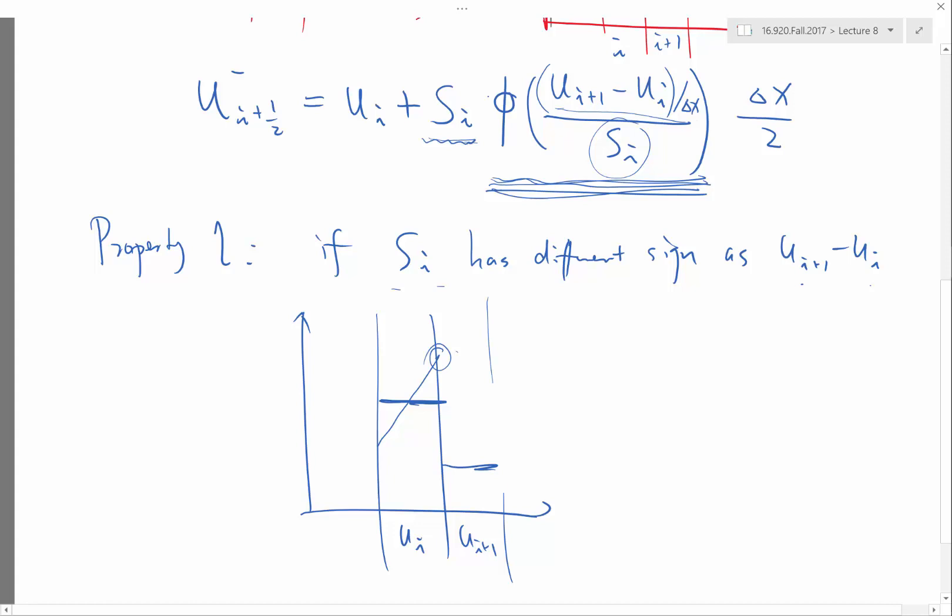Zero, right. I need to multiply by something that has to be exactly zero. So phi has to equal to zero.